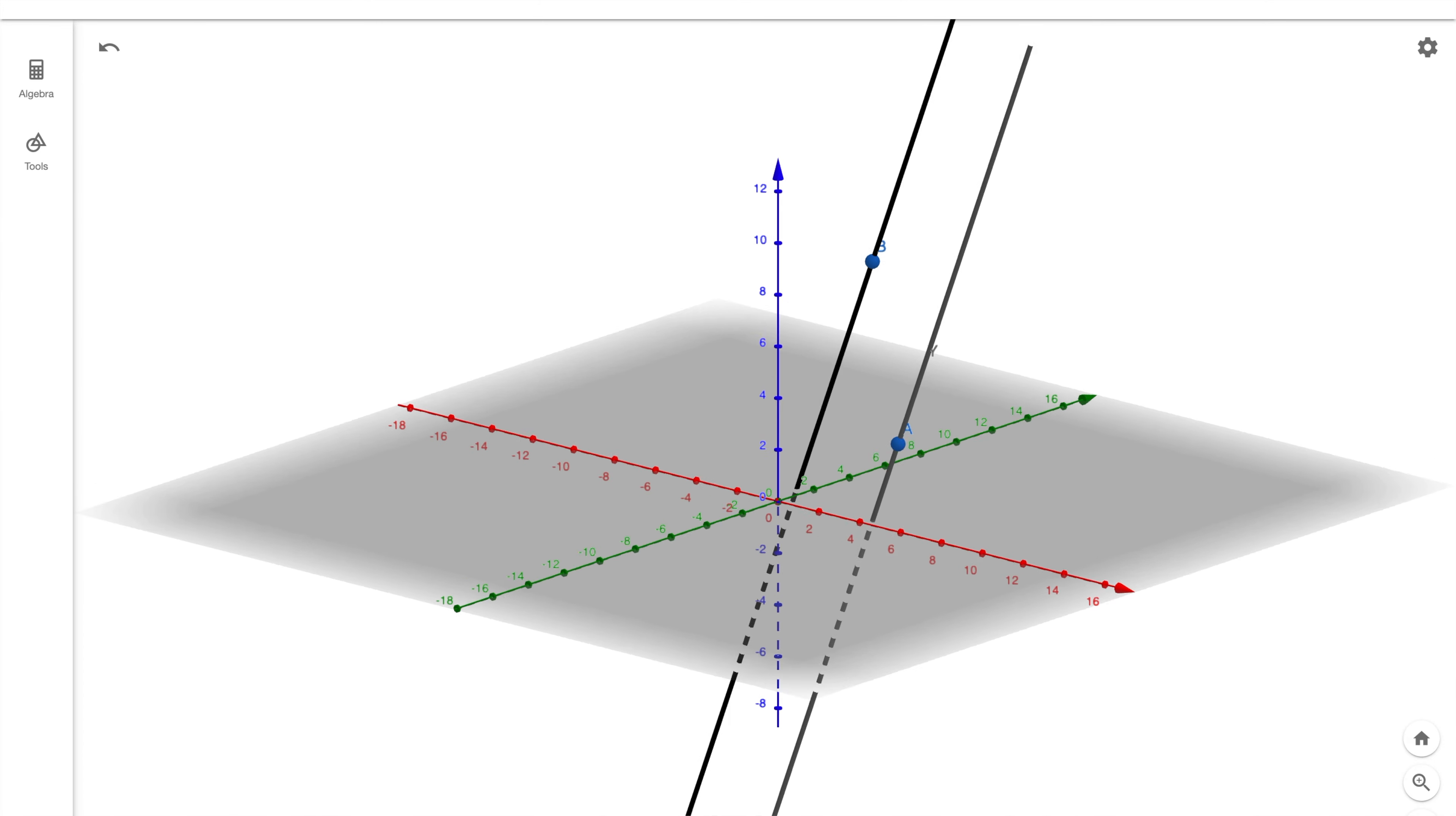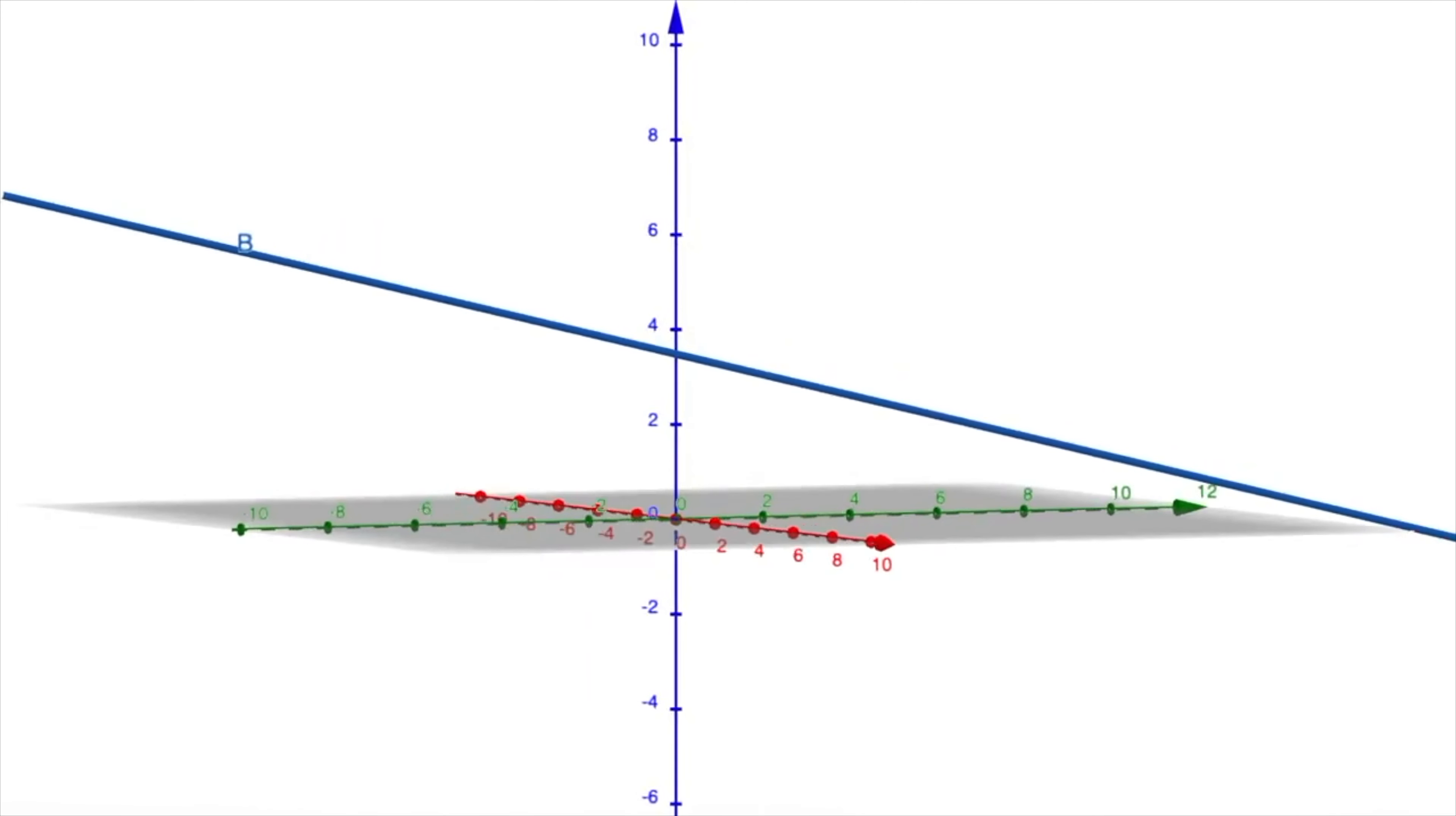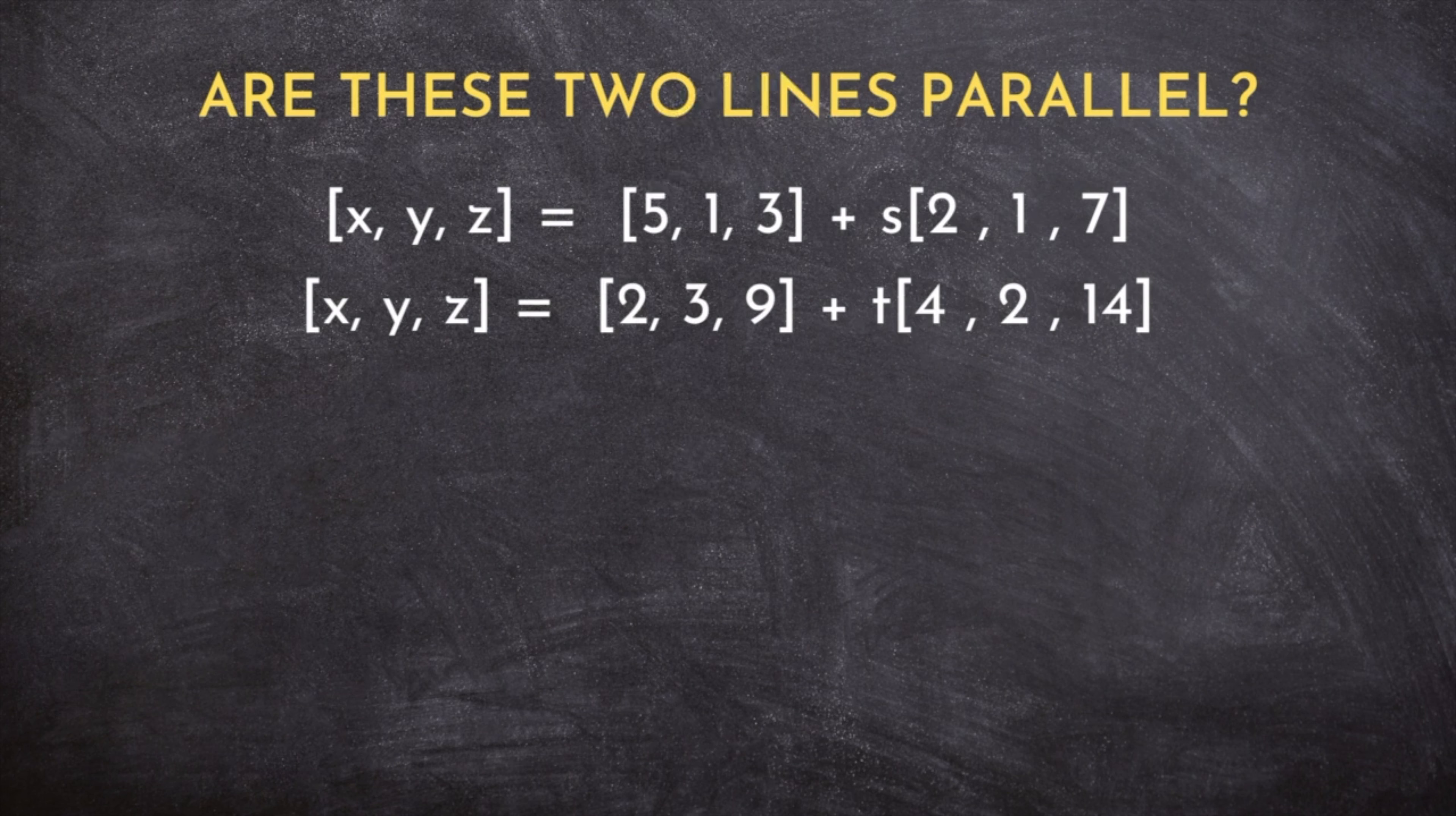The lines can either be parallel and distinct, meaning they never intersect, or they can be coincident, meaning they intersect everywhere. So just what case are we working with here?